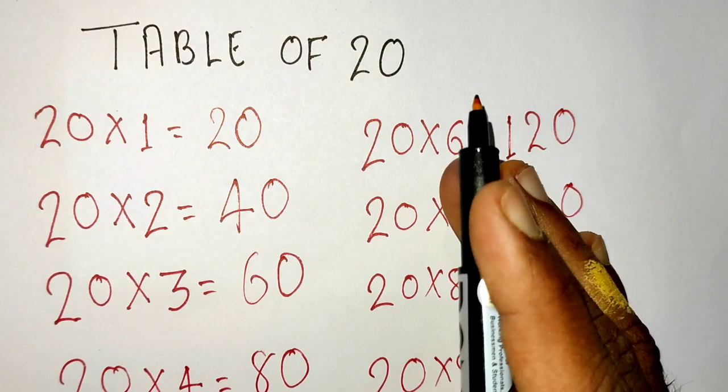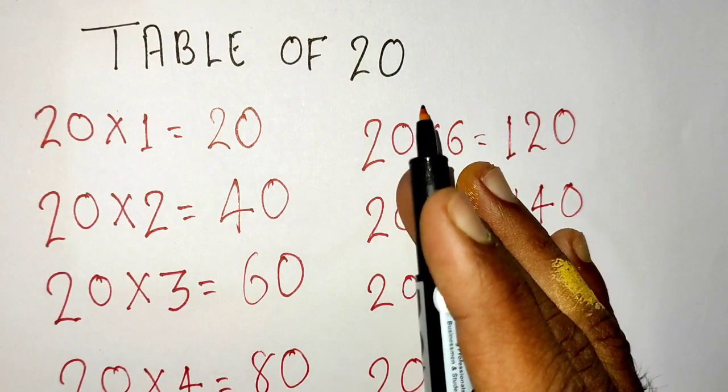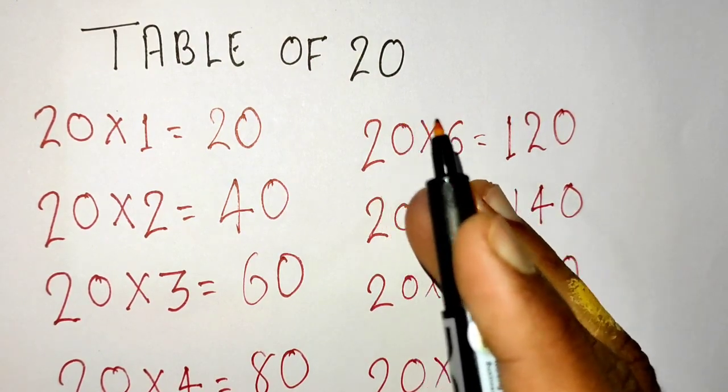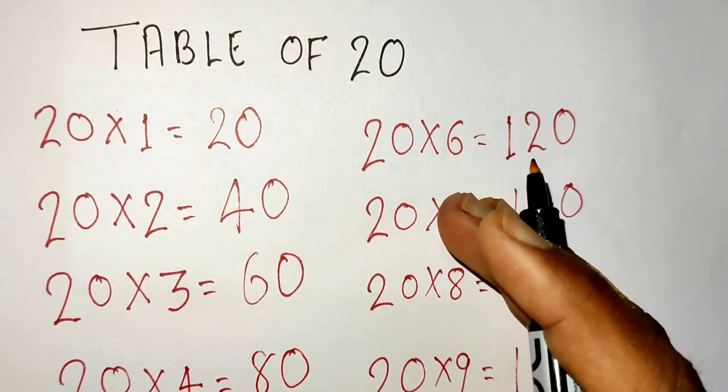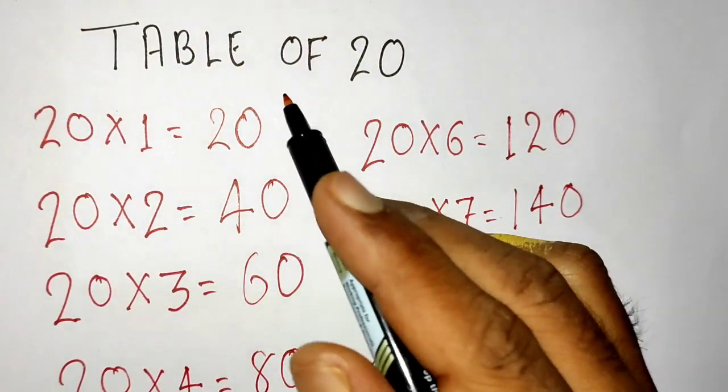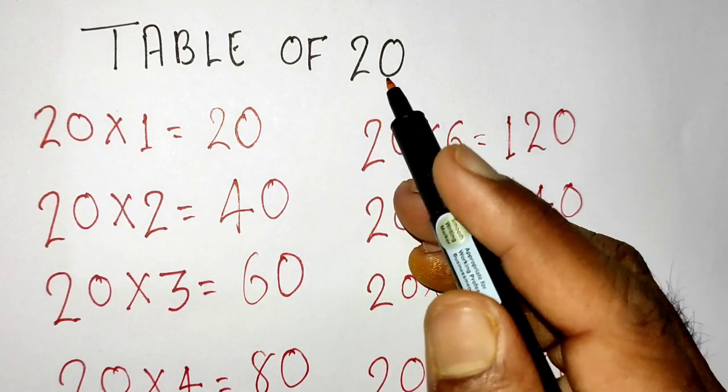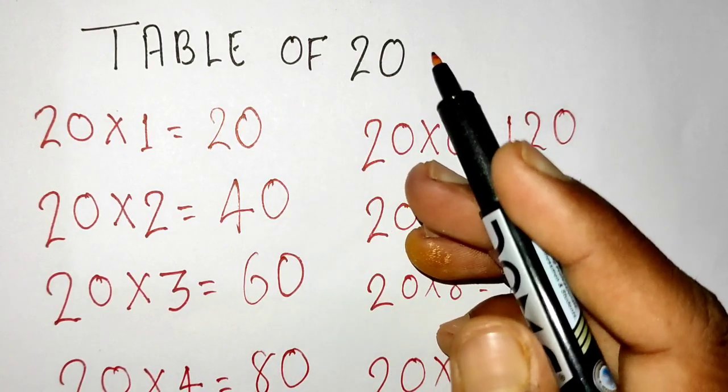And in the next video lecture we will learn about the table of 21, so children, till then goodbye.